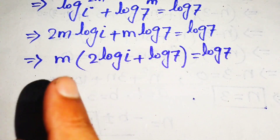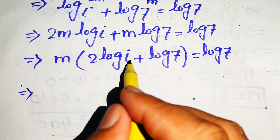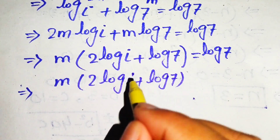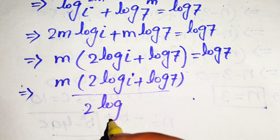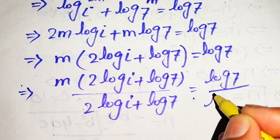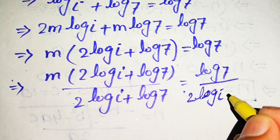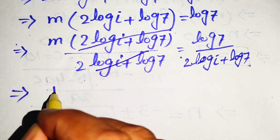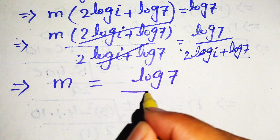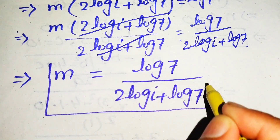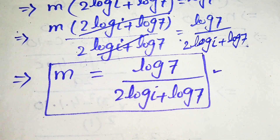We divide both sides by (2 log iota plus log 7) to isolate m, giving m equals log 7 divided by (2 log iota plus log 7). This is the final answer for method two. Thank you so much for watching this video — please subscribe to my channel for more exciting videos.